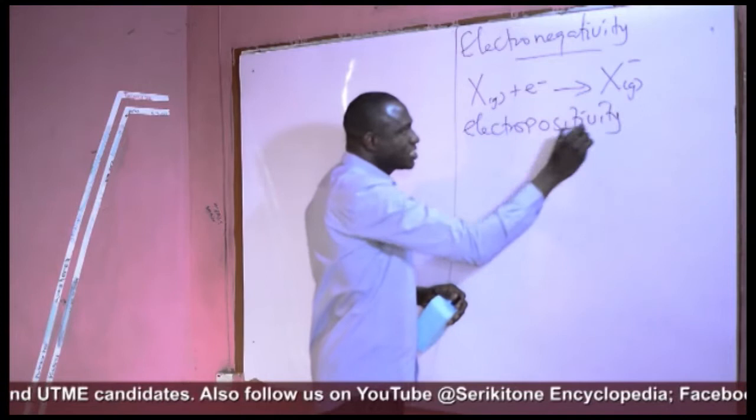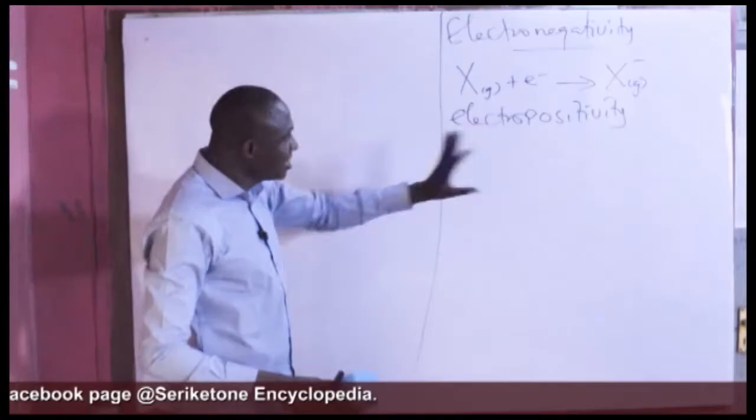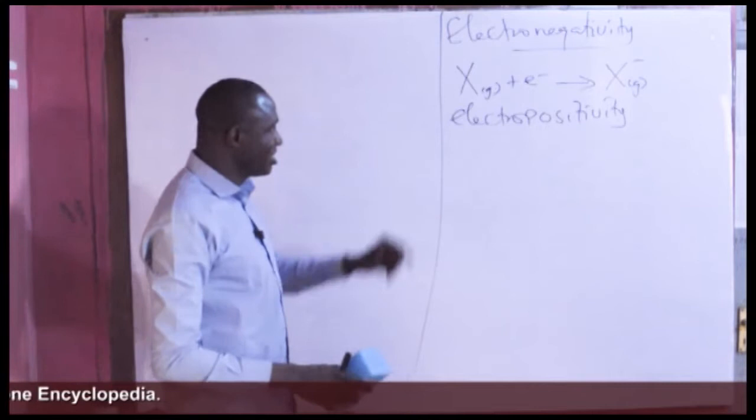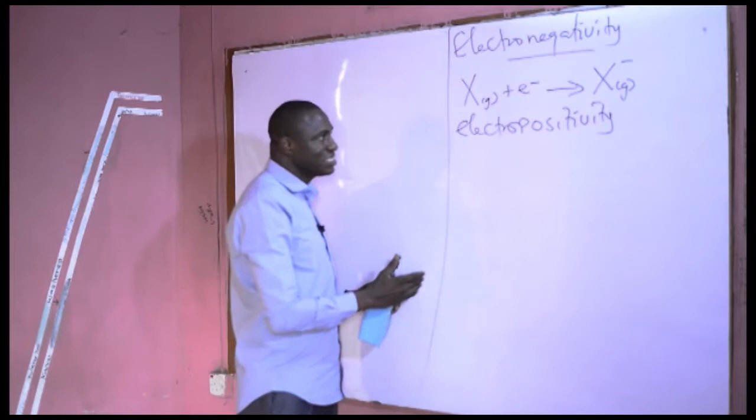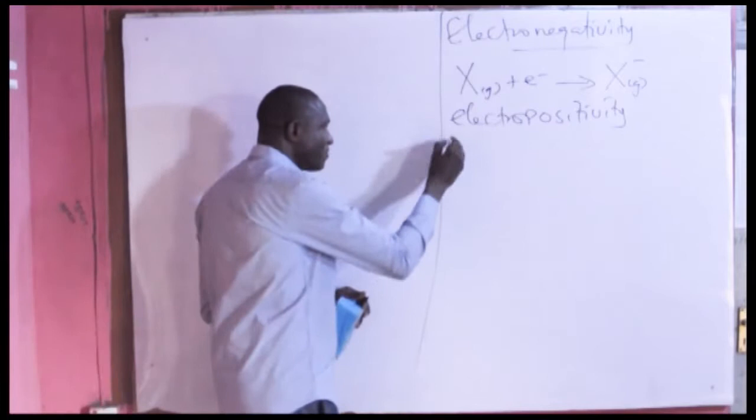Electropositivity, as against electronegativity, is a measure of the ability of an atom to release electrons to another atom in a molecule. In general, electronegativity increases across the period from left to right and decreases down the group from top to bottom of the periodic table. The factors responsible for this include atomic number and nuclear charge.